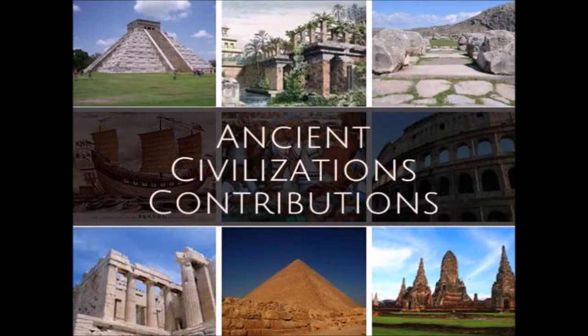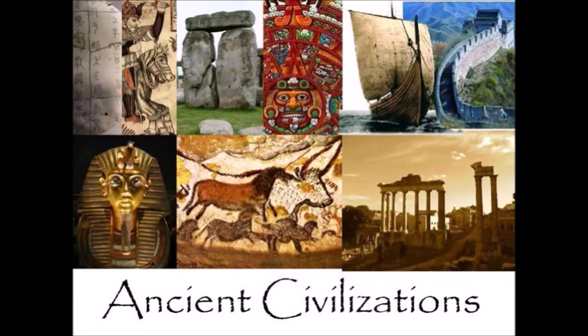Ancient civilizations became an advanced, organized way of living. They planned, organized, and specialized themselves. Food production and craft production were regulated. Huge buildings, the art of writing, and science and technology contributed to the development of society. They were advanced in farming, sculptures, brass making, trade, and transport.